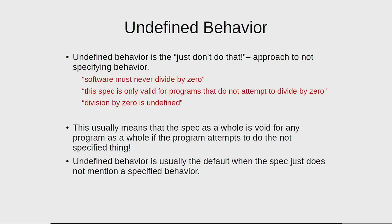The first thing you could do — more or less the default as understood by many people — is undefined behavior. Undefined behavior is essentially the 'just don't do that' approach to specification holes. In a specification you'd read something like 'software must never divide by zero,' or 'this spec is only valid for programs that do not attempt to divide by zero,' or simply 'division by zero is undefined.' That usually means the whole spec is invalid for the whole program if it attempts to do the unspecified thing even once, and that's really bad for falsification.